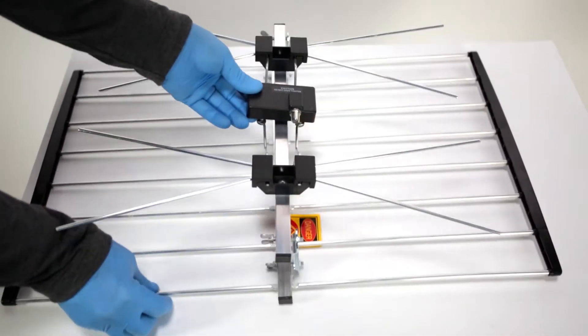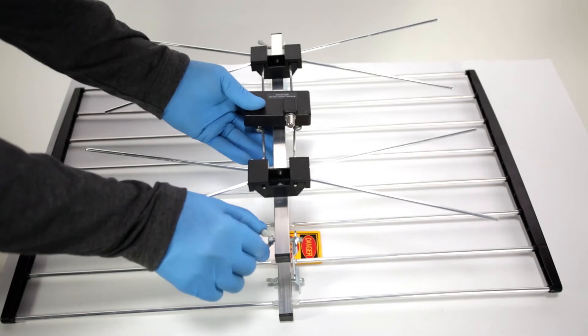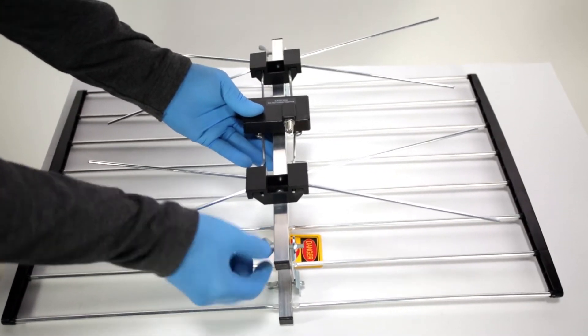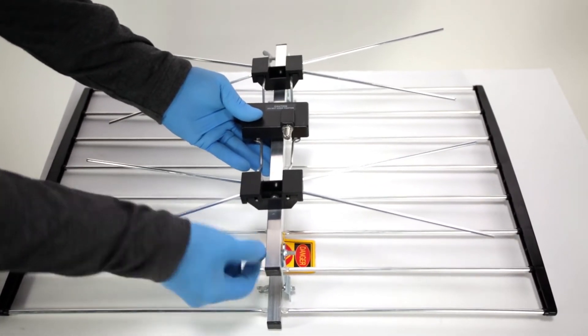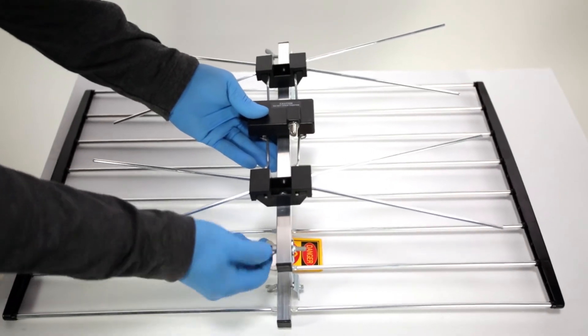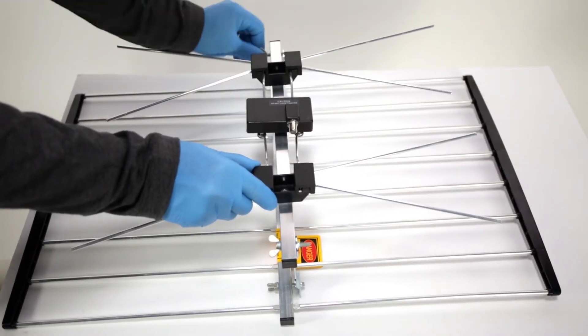Fold out the front section of the antenna. Make sure the front section is straight and parallel with respect to the reflector grid. Then securely re-tighten all four butterfly bolts.